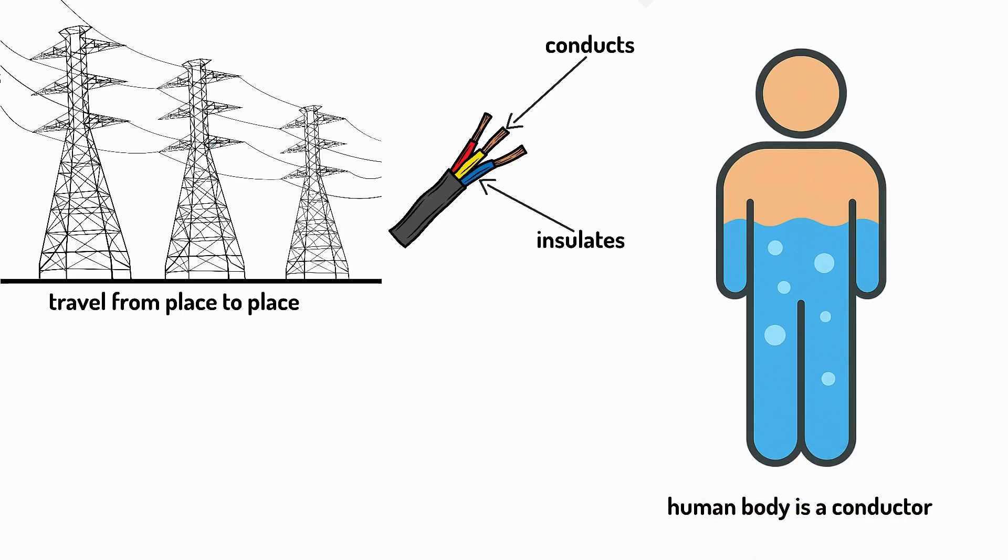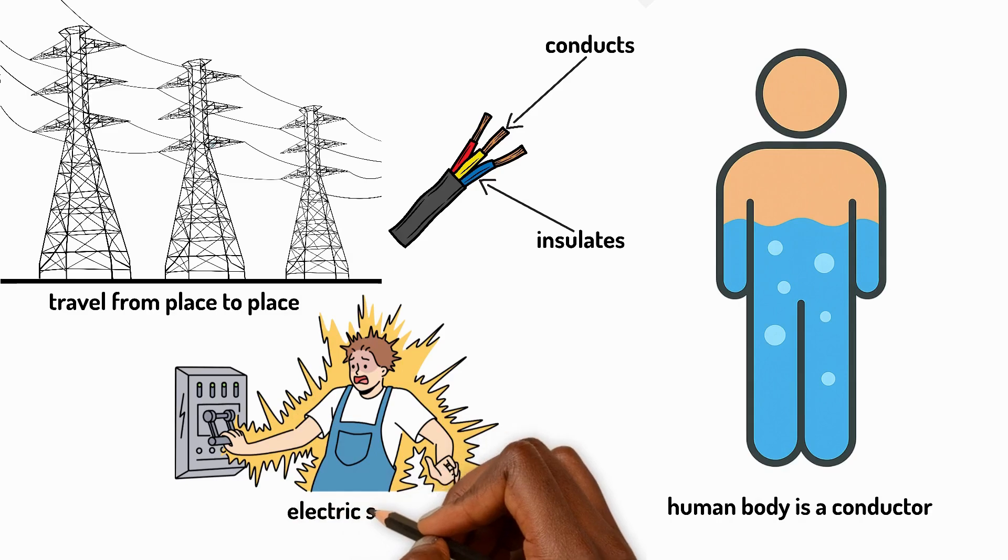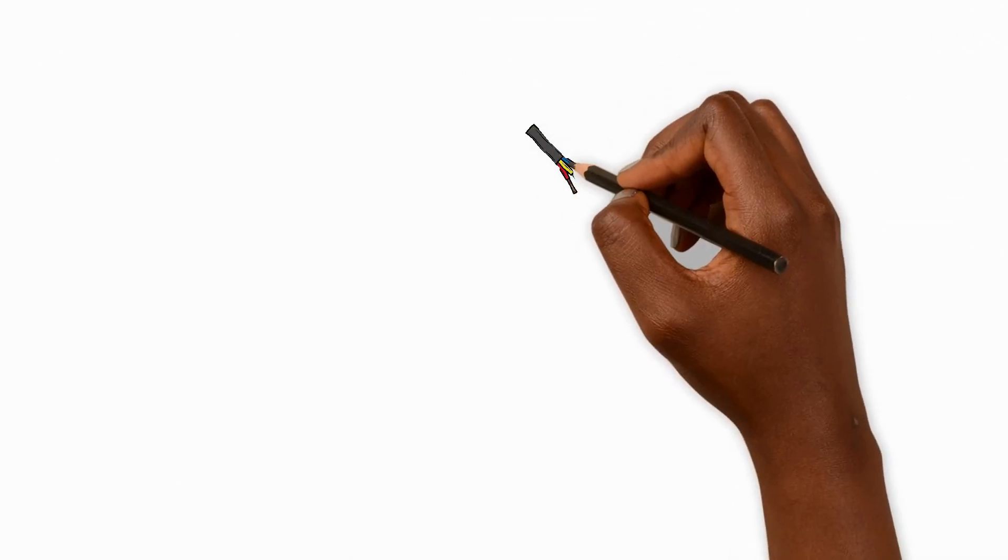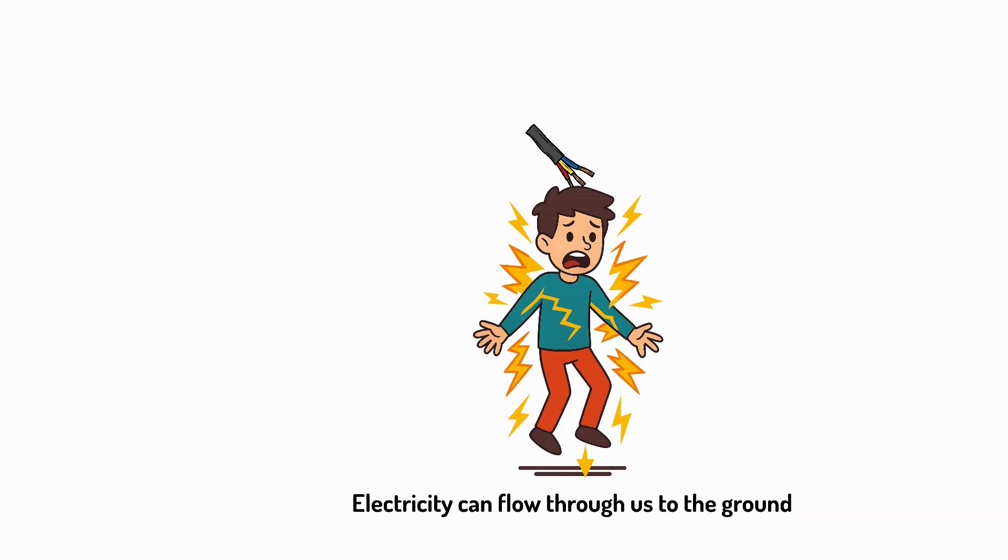The human body is actually a conductor because it contains water with dissolved minerals. That's why we can get an electric shock if we touch exposed wires. Electricity can flow through us to the ground.